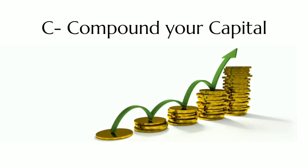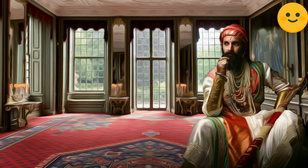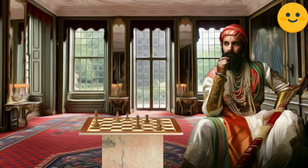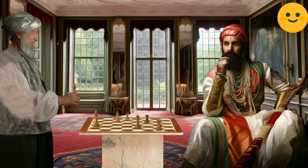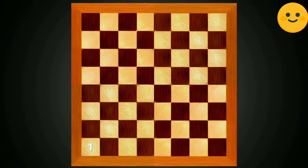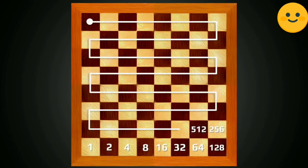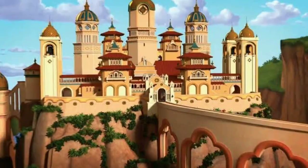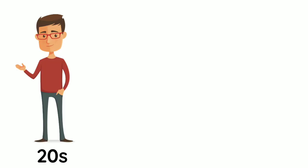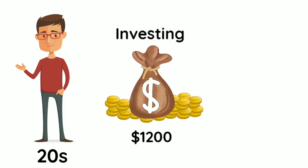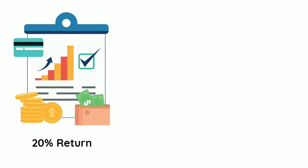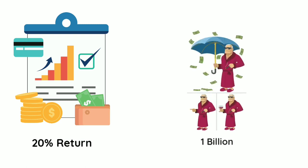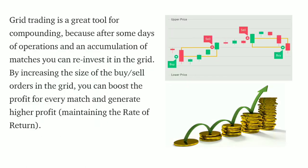C: compound your capital. The magic of compounding — the story of the king in India who ordered a mathematician to design a game illustrates it. After pleasing the king with the creation of chess, the mathematician asked to be paid with grains, starting with one grain in the first square of the board and doubling in each square. The king thought it was a bargain and accepted, but after several squares he realized there was no crop in the world that could pay the mathematician and had to hand over the kingdom. If you are a young person in your 20s and start investing $1,200 every month until your 60s with a 20% return annually, you could accumulate $1 billion.